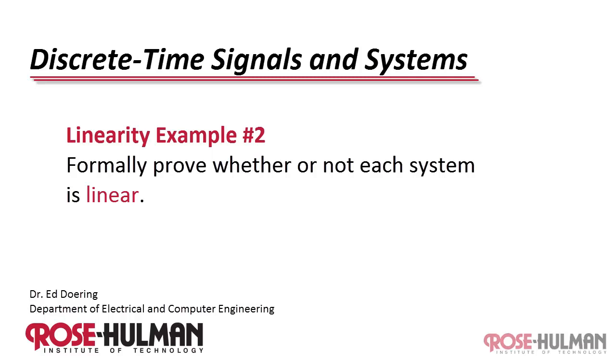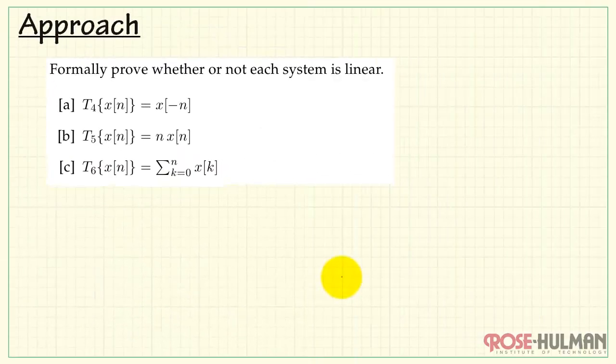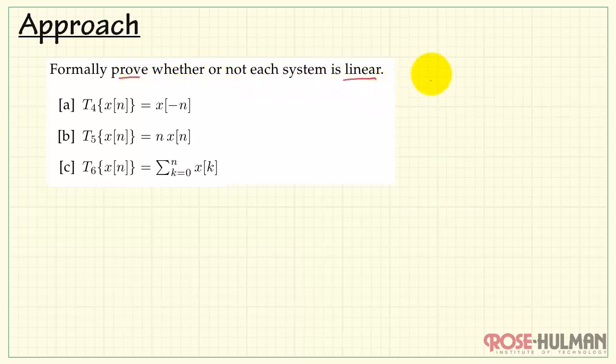This is linearity example number two. Formally prove whether or not each system is linear. Here we have three systems, and we need to formally prove whether or not each system is linear.